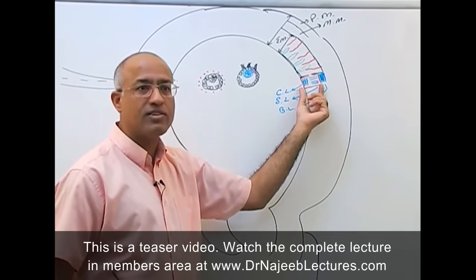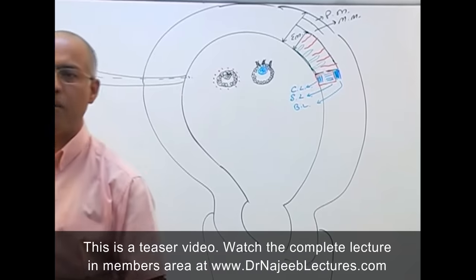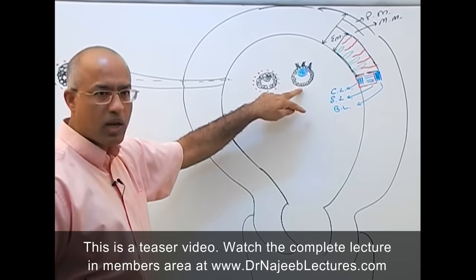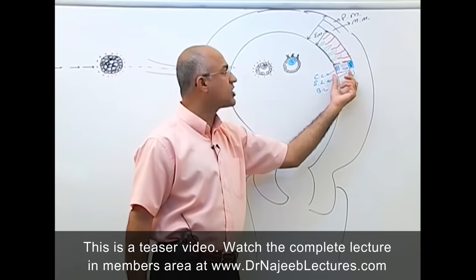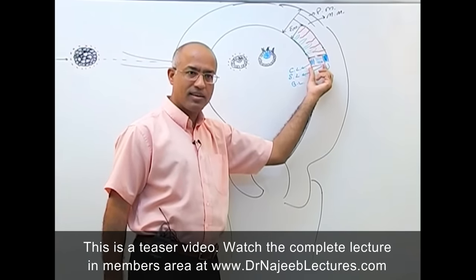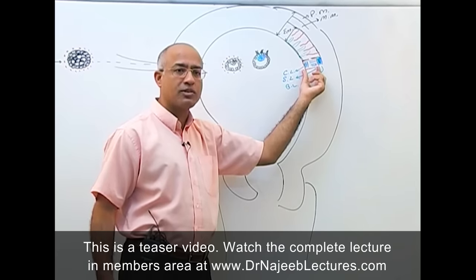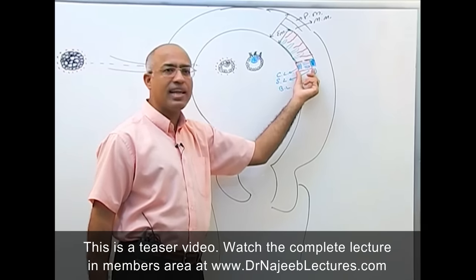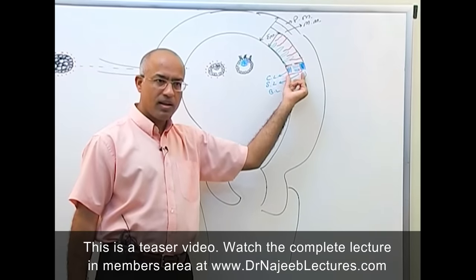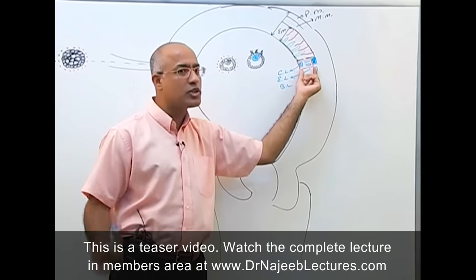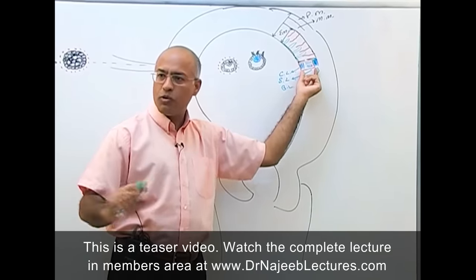The developing embryo or blastocyst is going to implant itself within the functional layer. With every reproductive cycle the functional layer is lost in menstrual flow, but once the female is pregnant and the blastocyst implants there, this layer should not be lost.